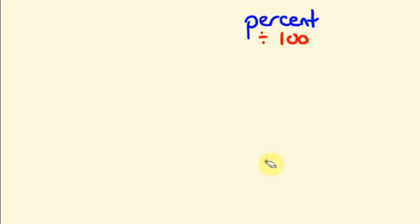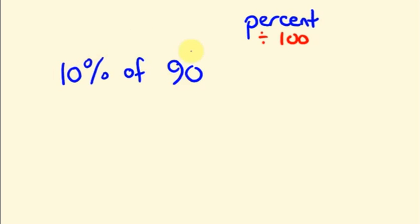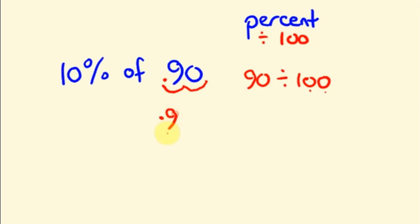Let's see another example: ten percent of ninety. Ten percent of ninety — we can work it out by dividing ninety by hundred first. Dividing ninety by hundred, we shift the decimal point two places since hundred has two zeros, and we get zero point nine zero.